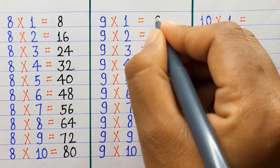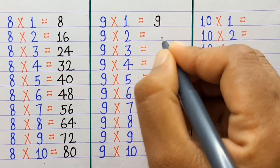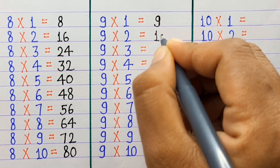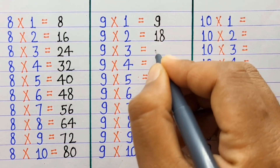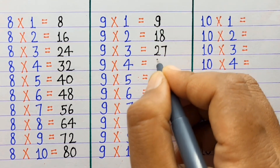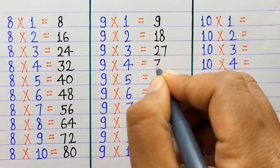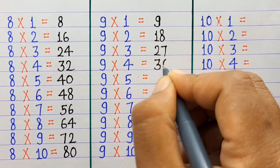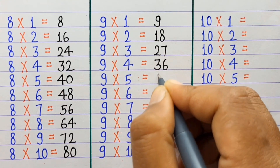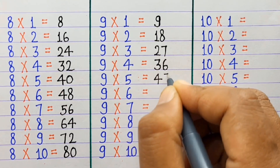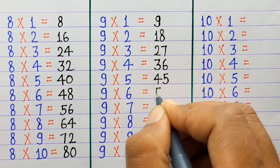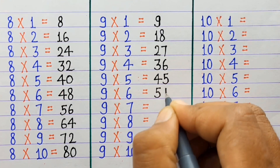9×1=9, 9×2=18, 9×3=27, 9×4=36, 9×5=45, 9×6=54.